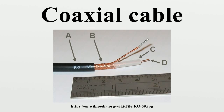Coaxial cables require an internal structure of an insulating material to maintain the spacing between the center conductor and shield. The dielectric losses increase in this order: ideal dielectric vacuum, air, polytetrafluoroethylene, polyethylene foam, and solid polyethylene.